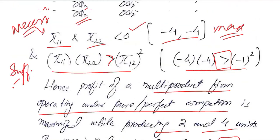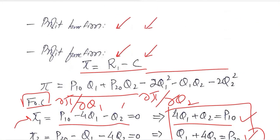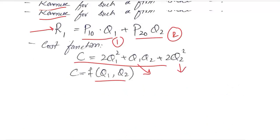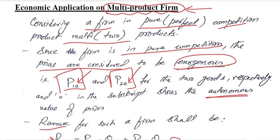In this way we have found the maximized value of the profit as well as the critical values of the output levels of the two products that are produced by a firm which is a multi-product firm. For this we used the tool of optimization and we had two choice variables in this case. Thank you.